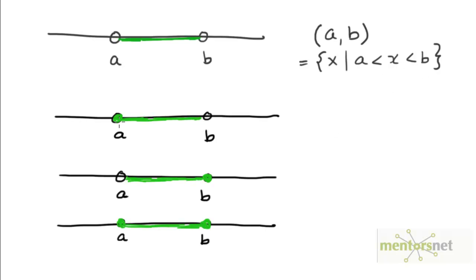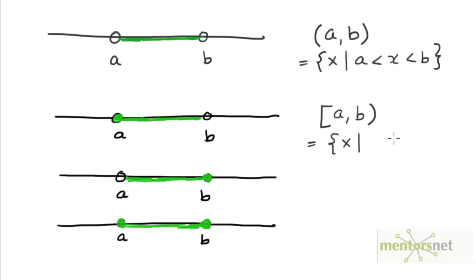The second interval here includes the left endpoint A but excludes the right endpoint B. So we write it as A, B with a square bracket on the left endpoint and a round bracket at the right endpoint. This is nothing but the set of all numbers which are greater than or equal to A and less than B. So these numbers can include A but they have to be less than B — they can't be equal to B.